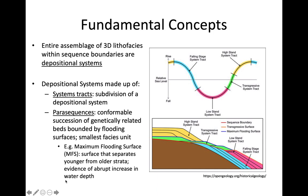The maximum flooding surface is the deepest point in a sequence — evidence of an abrupt increase in water depth. Our four systems tracks are the High Stand Systems Track (HST), the Transgressive Systems Track (TST), the Low Stand Systems Track (LST), and the Falling Stage Systems Track (FSST). We also have the maximum regressive surface — also called the ravinement or MRS — marking the shallowest point. These parasequences exist within our systems tracks, which together make up one complete sequence of sea level rise and fall within a basin.